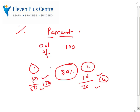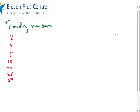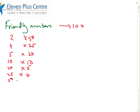The main part of this lesson is to learn how to convert fractions into a percentage. Before we start, there are a few important things to know — it's useful to write these down. I have a list of numbers I call 'friendly numbers.' They are friendly because I can very easily turn them into 100. To turn 2 into 100 we multiply by 50; to turn 4 into 100 we multiply by 25; 5 by 20; 10 by 10; 20 by 5; 25 by 4; 50 by 2.